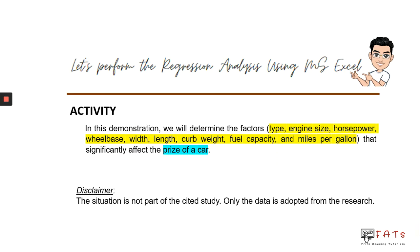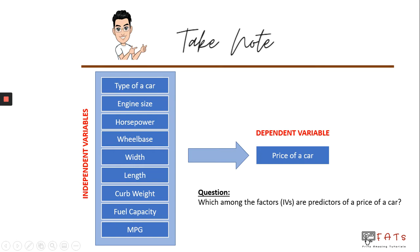Now let's perform the regression analysis using Microsoft Excel. In this demonstration, we will determine the factors that significantly affect the price of a car. Note that the situation here is not part of a cited study — only the data is adapted. We have nine independent variables: type of car, engine size, horsepower, wheelbase, width, length, curb weight, fuel capacity, and MPG or miles per gallon. Our one dependent variable is the price of a car, and the goal is to answer: which among the factors are predictors of the price of a car?